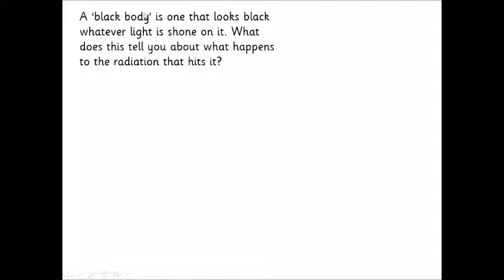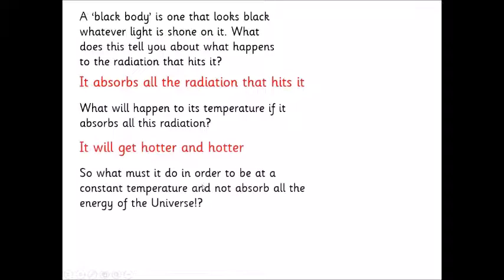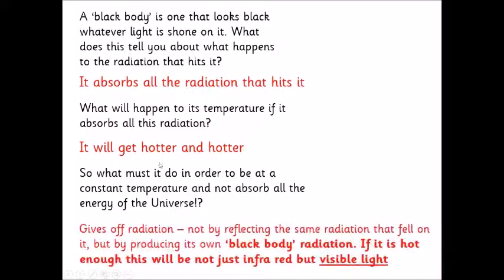The first thing we need to do is define what a black body is. A black body is one that looks black normally — if it's cool it will look black — and why does it look black? It looks black because it absorbs visible light and it will also absorb infrared radiation. So if it is a perfect absorber, all the radiation that hits it is absorbed. But if that was the only thing that happened, its temperature would just get hotter and hotter. So what we find is that black bodies also must be very good emitters of radiation — a black body is a perfect absorber and a perfect emitter of radiation.